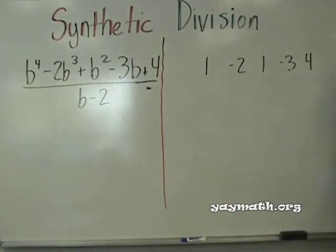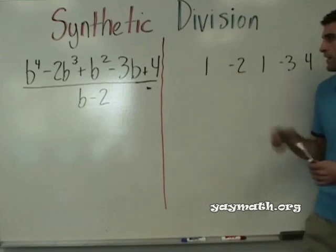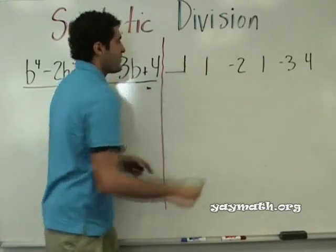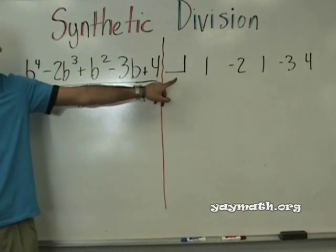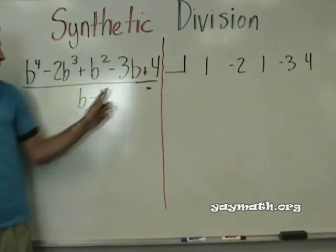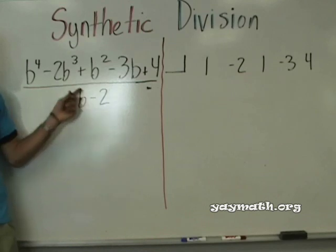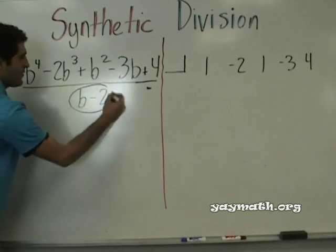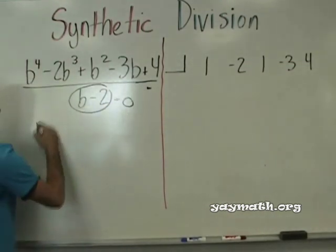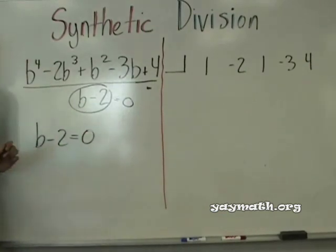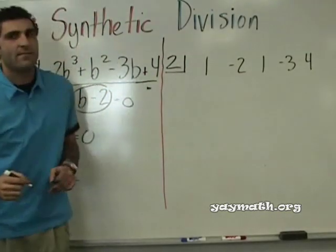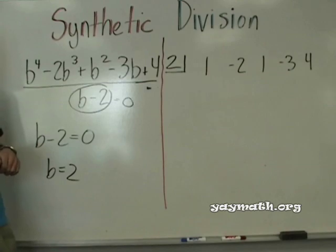And this is where we're going to do our problem. Now I'm going to stick it over here. We need a number that we're going to divide into — usually we put this in a little half-box. We're going to call this the box number. This number has to do with b minus 2. The number you put in the box is when you set b minus 2 equal to 0. So b minus 2 equals 0, which means b equals 2. So 2 goes in the box.